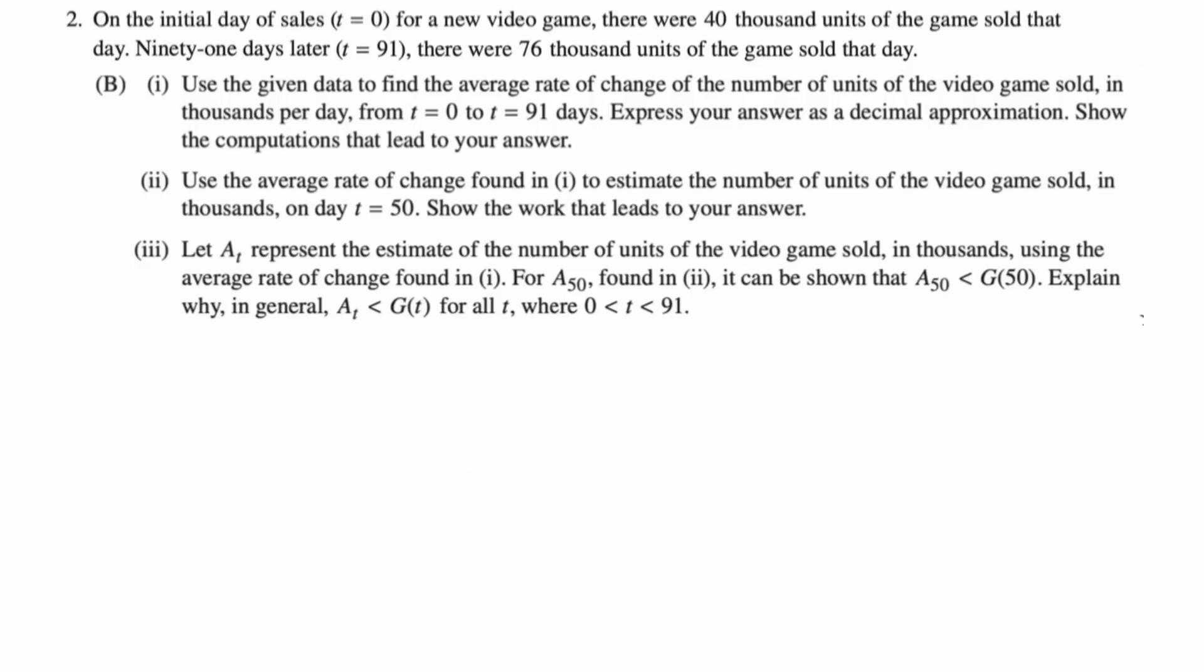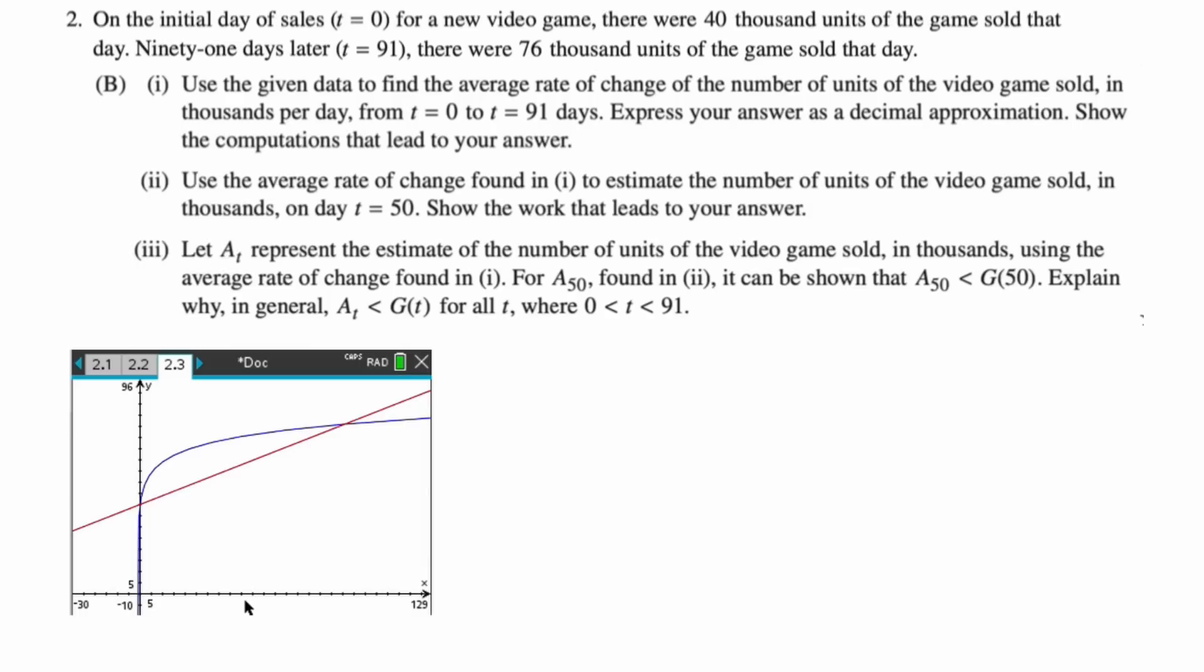For part three, we're going to let A(t) represent the estimate of the number of units of the video game sold in thousands using the average rate of change found in part one. For A_50 found in two, it can be shown that A_50 is less than G(50). Explain why in general A_t is less than G(t) for all t between 0 and 91. I had a lot of trouble reading it, let's see about doing it.